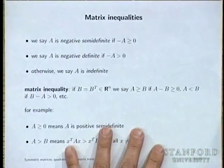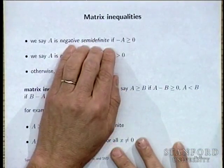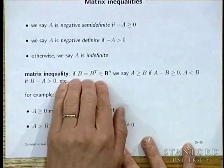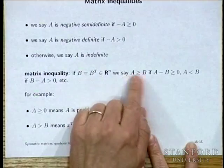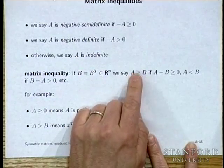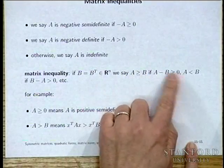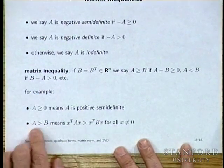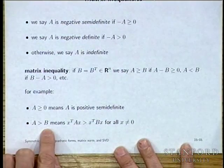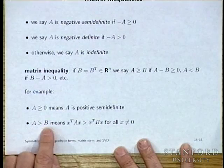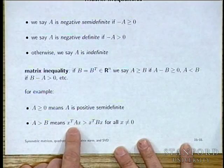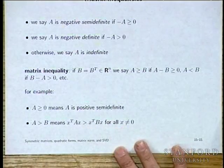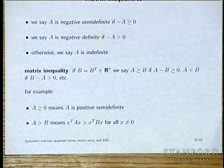You can overload matrix inequalities: write A ≥ B if A minus B is positive semi-definite, and A > B (strictly) if A minus B is positive definite. To say A > B means the quadratic form defined by A is bigger than the quadratic form defined by B for all x not equal to zero.